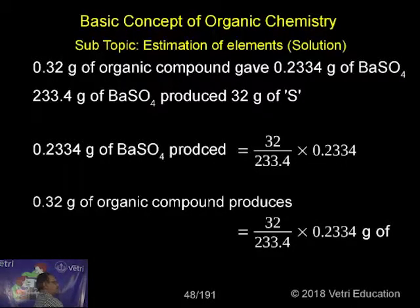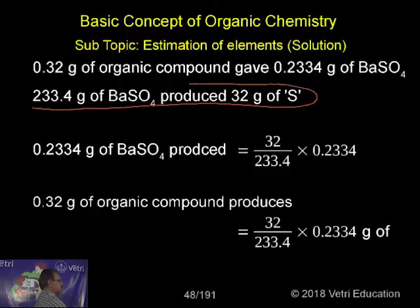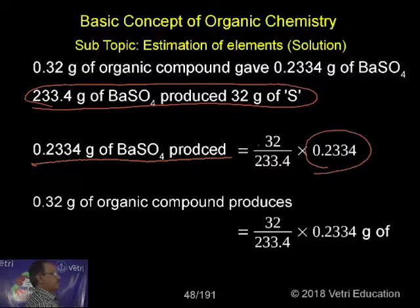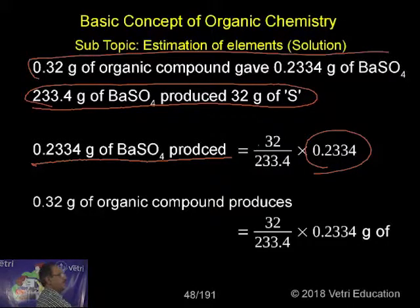233.4 grams of barium sulfate produces 32 grams of sulfur. So 0.2334 grams of barium sulfate produces 32 divided by 233.4 times 0.2334. Actually, this is the result given, we are getting the result.